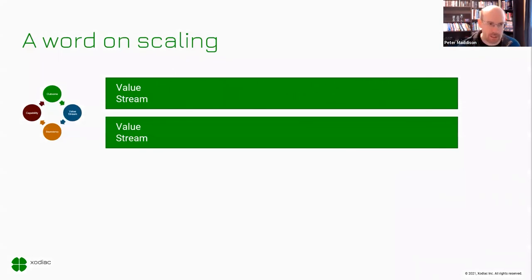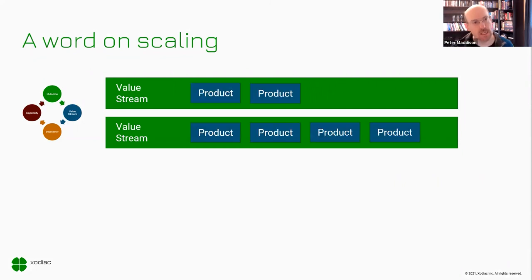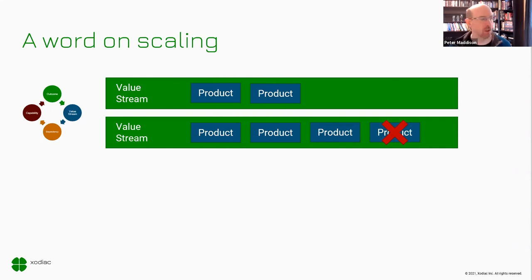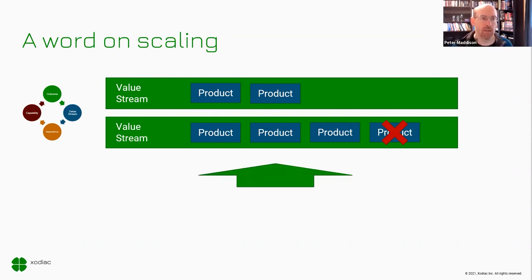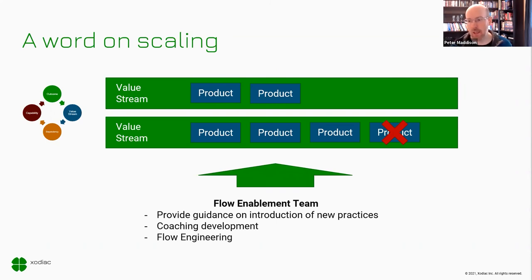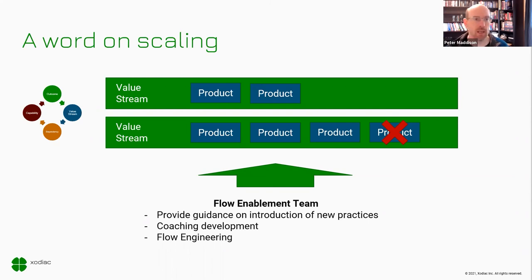So how do we scale this? If we think about value streams running across the organization, in those value streams we'll have a number of different products contributing to them. We need a way of understanding and managing this. As we start to scale, an effective way is to build a flow enablement team that starts with coaching, development, and application of flow engineering practices, and helps build these ways of working within the organization.